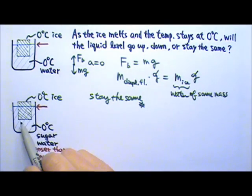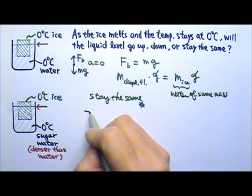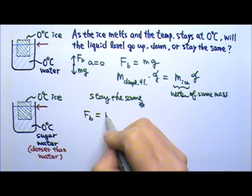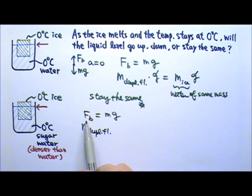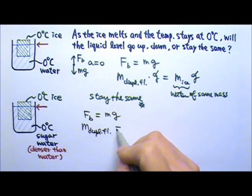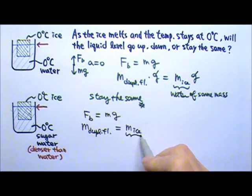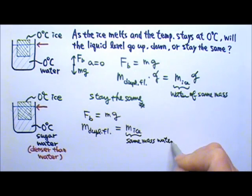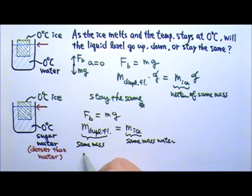Again, the ice is staying at rest, so the upward buoyant force must equal the downward mg. The buoyant force still equals the downward mg of the ice. The buoyant force is the weight of the displaced fluid — canceling the g's on both sides, the mass of the displaced fluid equals the mass of the ice cube. This ice is going to melt into the same mass water, and this mass of displaced fluid is the same mass sugar water.